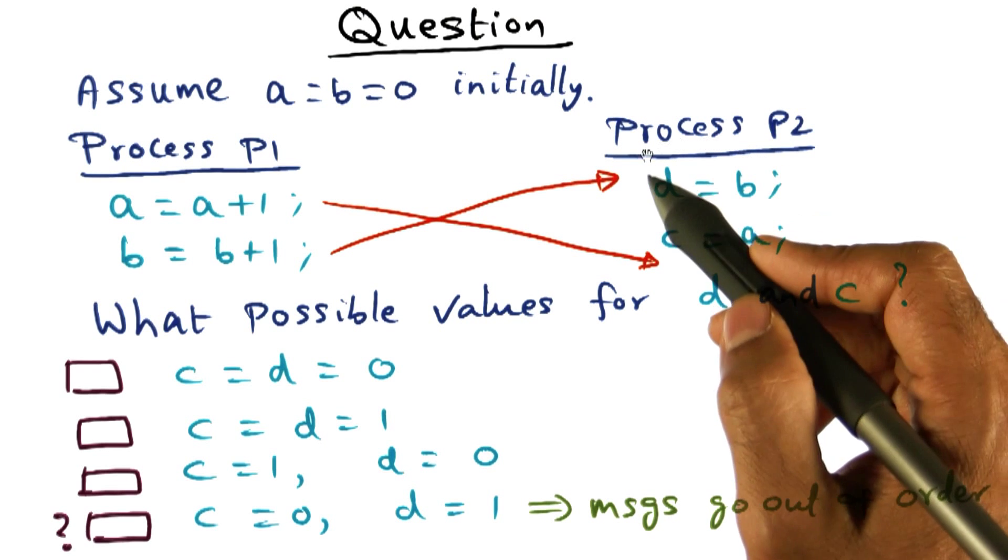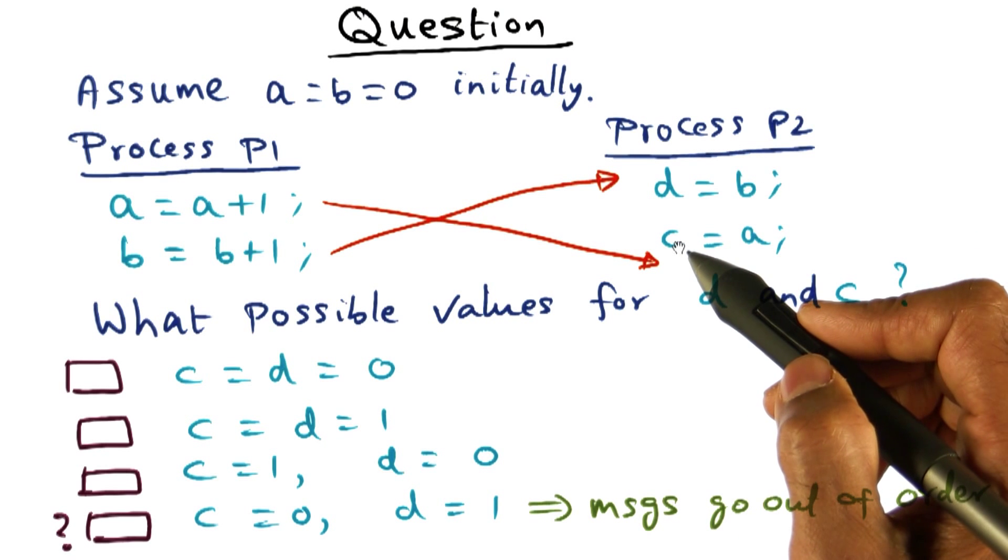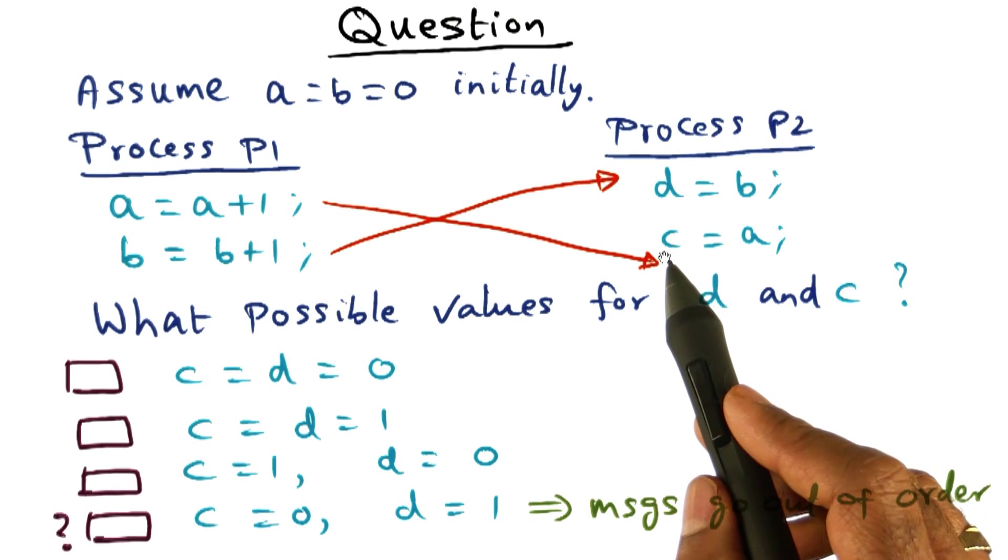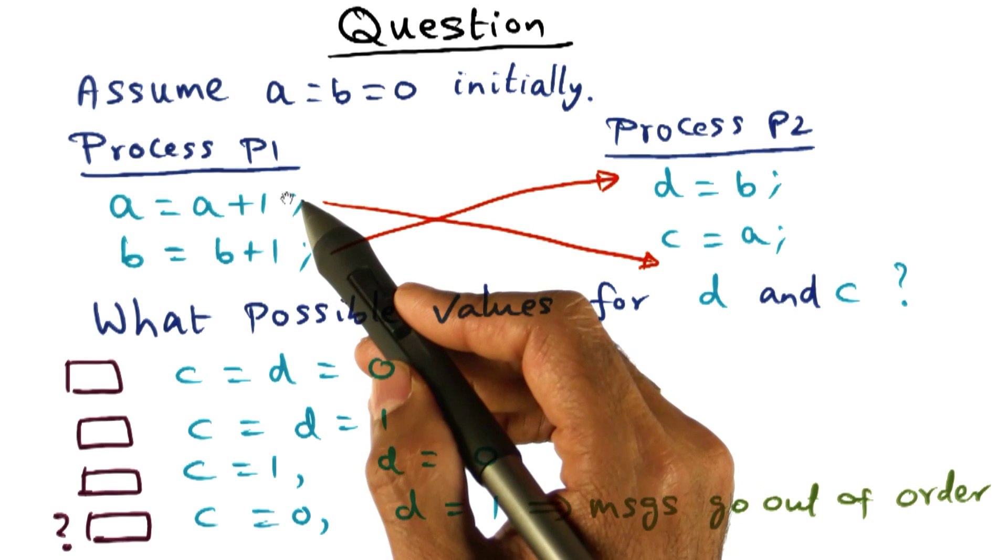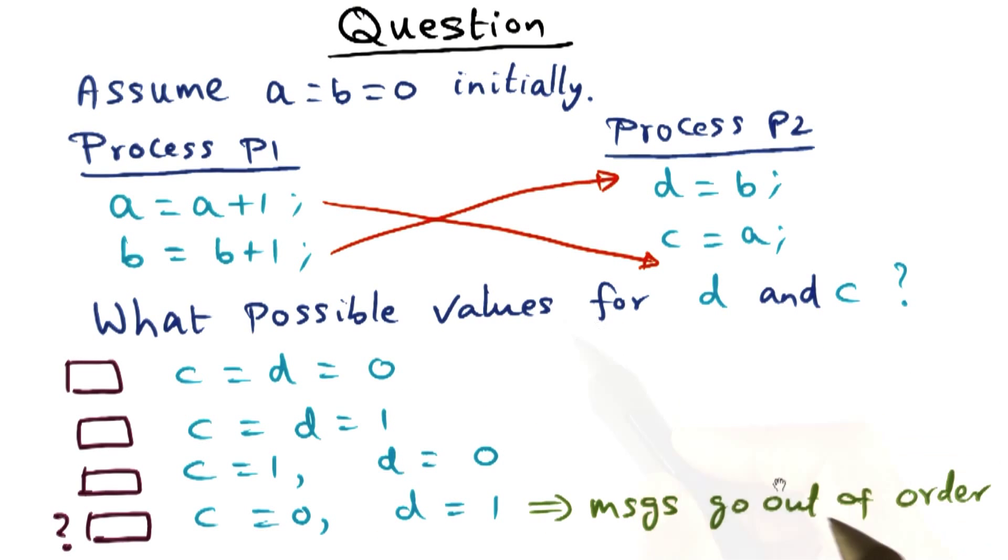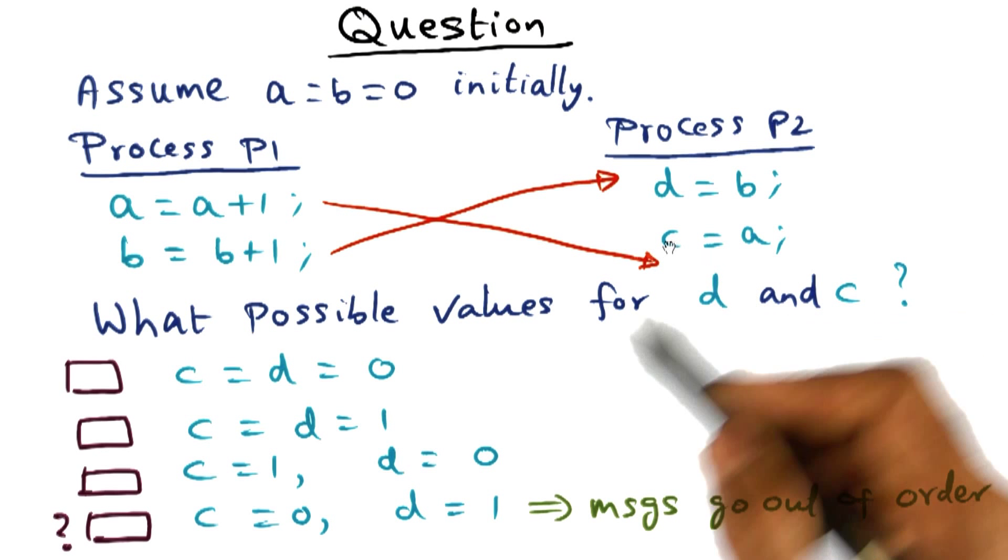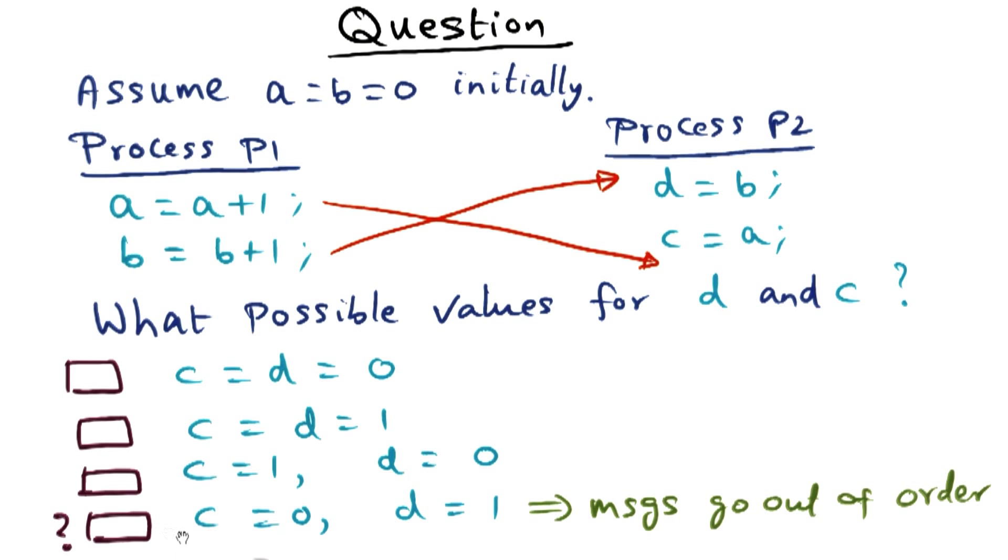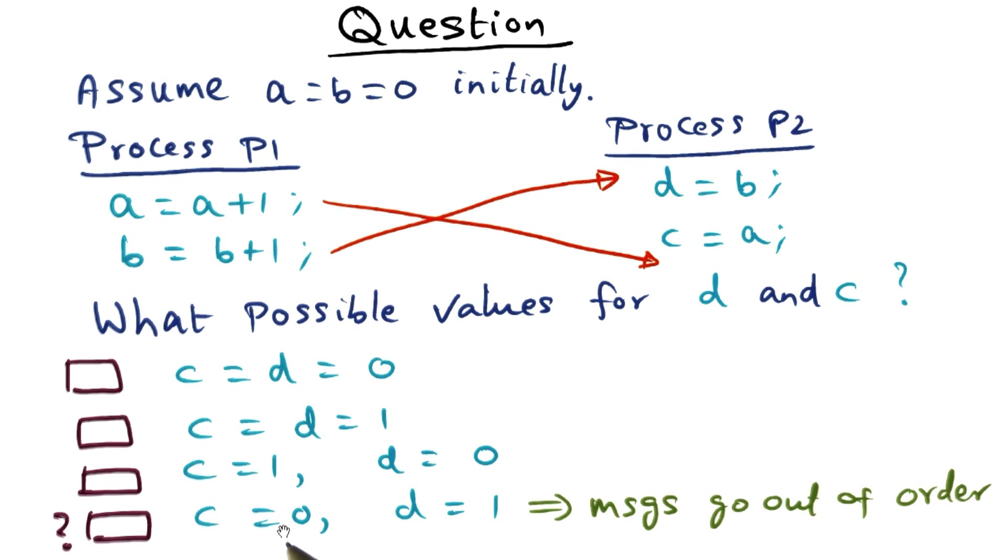And therefore, this assignment gets a new value of B. But when the process executes this statement, the new value of A hasn't arrived yet. And it can happen if the messages go out of order. And in that case, you can end up with this particular choice of C having a value of 0 and D having a value of 1 when this process completes execution.